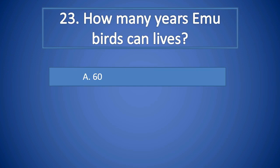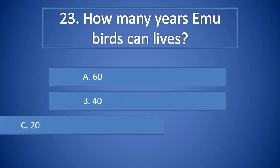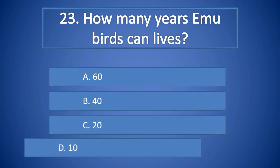Question Number 23: How many years can emu birds live? A. 60, B. 40, C. 20, D. 10. Right answer is A. 60.